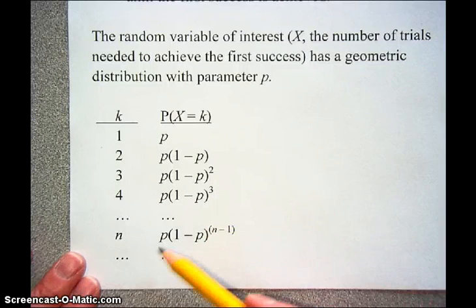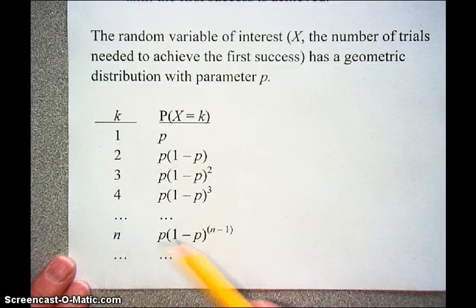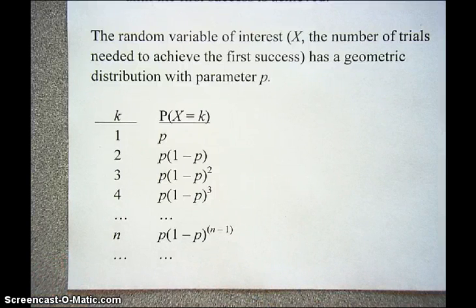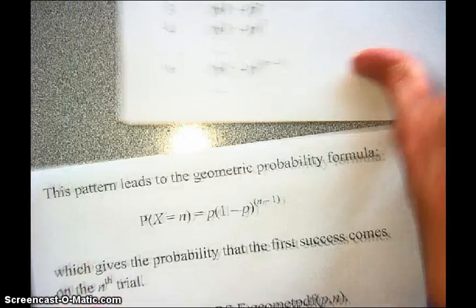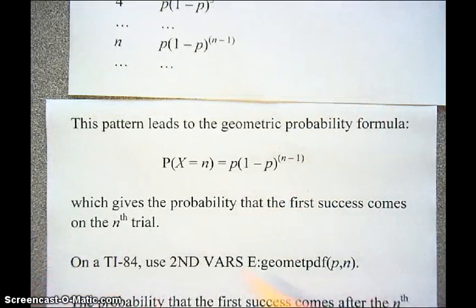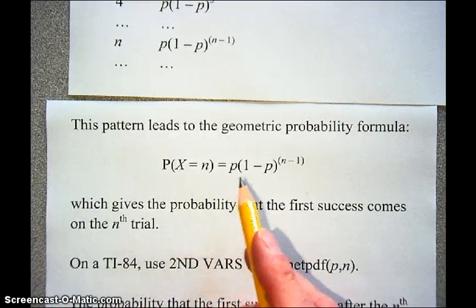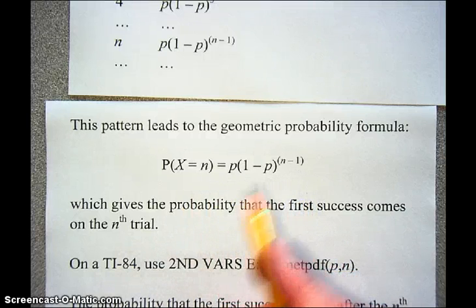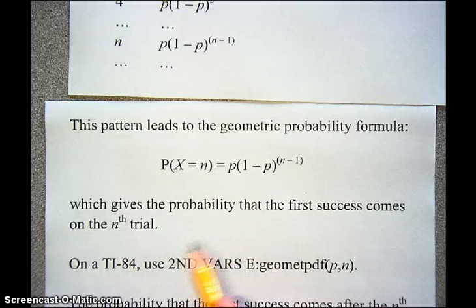So if we're looking for the probability that X equals N, that would be P times (1 minus P) to the N minus 1 power. Following that pattern, we get the geometric probability formula: the probability that X equals N is P times (1 minus P) to the N minus 1 power. That's the probability that the first success comes on the Nth trial.